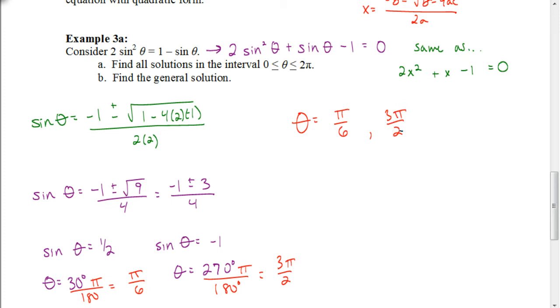Now, we're trying to find all the solutions between 0 and 2 pi. So recall that when we're working with the sine function, we have to subtract each of these from pi to figure out if there's any other solutions. So I'm going to take pi minus pi over 6.